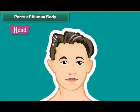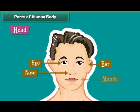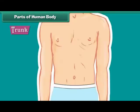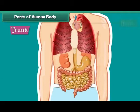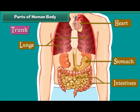Head is the uppermost part of the body. Eyes, ears, nose and mouth are located on it. Trunk is the middle part of the body. It is divided into chest and abdomen. Many important organs such as the heart, lungs, stomach, intestines and kidneys are located inside the trunk.